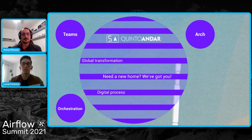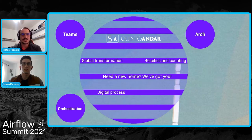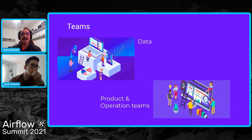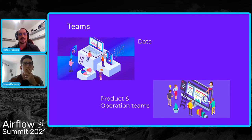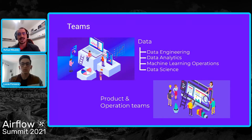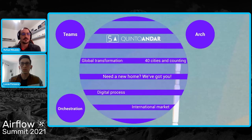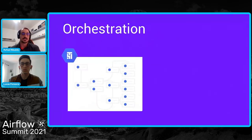We are currently in 40 cities in Brazil and expanding to Mexico really soon. On the inside, we have, along with several product and operation teams, a data area responsible to support decision making, and we subdivide that area in data engineering, data analytics, machine learning and data science teams with dedicated focus. In order to make data available to not only those teams but also to the entire company, we've chosen Airflow as the main platform for controlling ELT jobs and also machine learning pipelines.